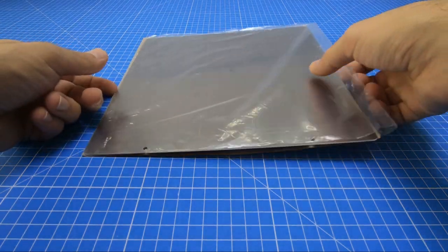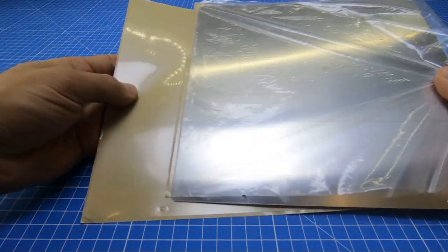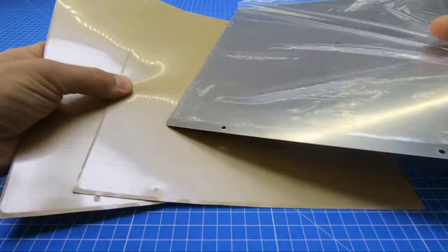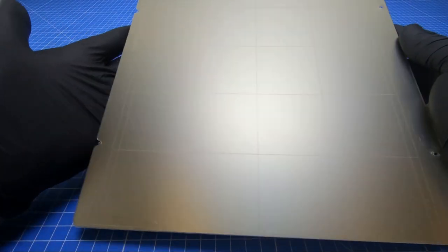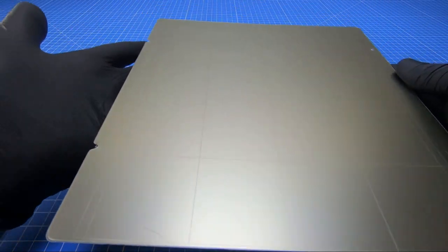Hi everyone, in this quick video I'll show you how to install PEI sheets onto your magnetic heat bed steel sheet so you get a bubble-free, perfect surface.